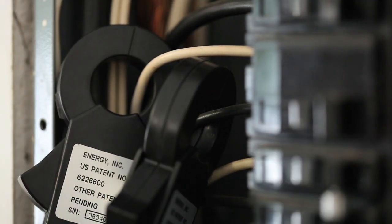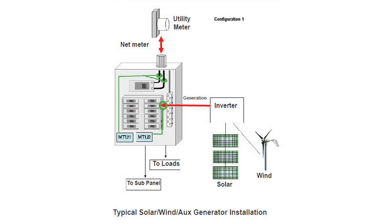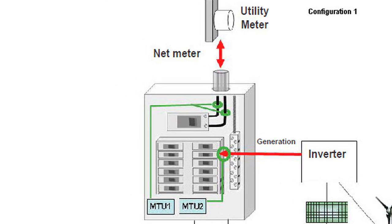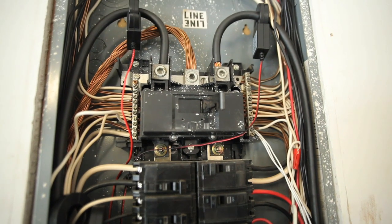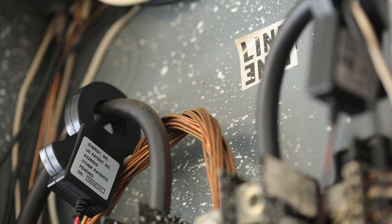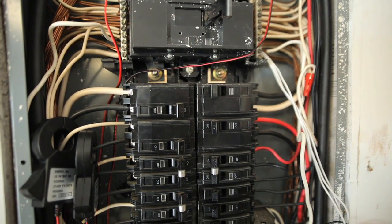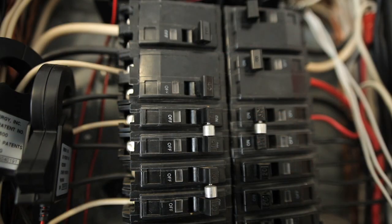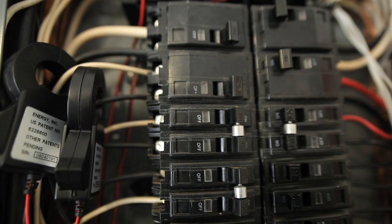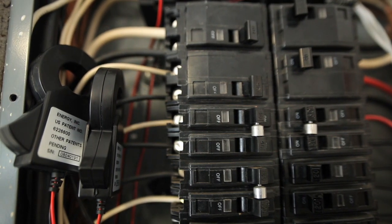There are three basic configurations for a generation system. The most typical configuration is shown here, where the source of generation feeds into a breaker in the main panel. In our example, measuring transmitting unit 1 is measuring power to and from the electric grid. The CTs are clamped around the main feeds from the meter, with the red polarity dots facing away from the breaker panel. The CTs of MTU 2 are clamped on the wires coming into the breaker panel from the generation source, with the red polarity dots facing away from the electrical panel toward the source of generation.